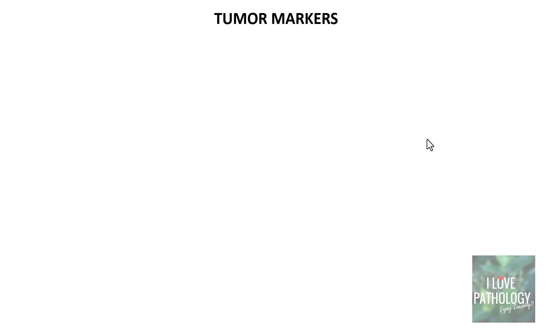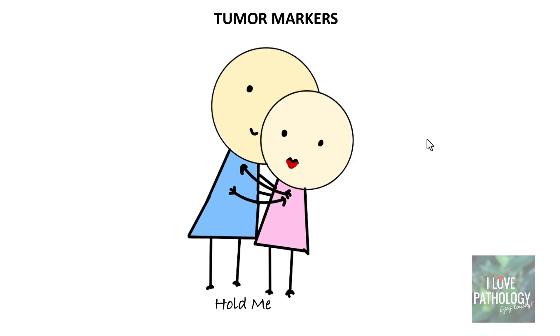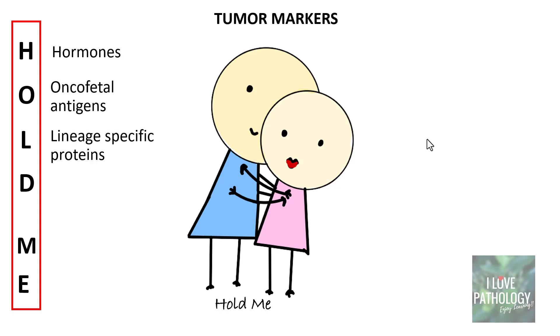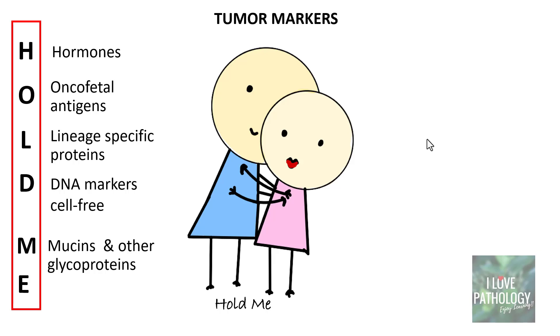What are the categories of tumor markers and how do we remember them? To make this concept simple, I have used a mnemonic called HOLD ME. H stands for Hormones, O for Oncofetal antigens, L for Lineage-specific proteins, D for DNA markers which are cell-free, M for Mucins and other glycoproteins, and E for Enzymes. Let us look into each of these categories in detail.